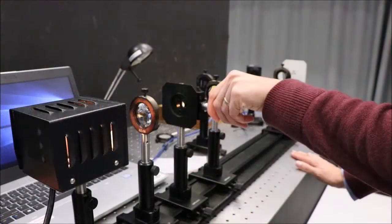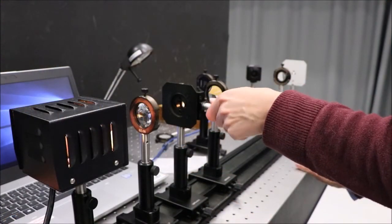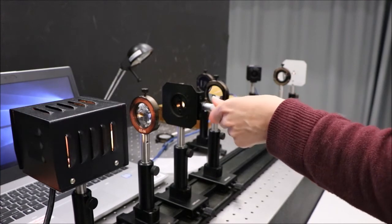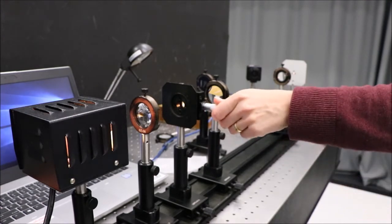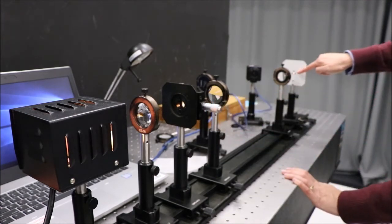Now slightly open the slit jaws using this micrometer knob, and we should get a white light image of the slit on the screen.